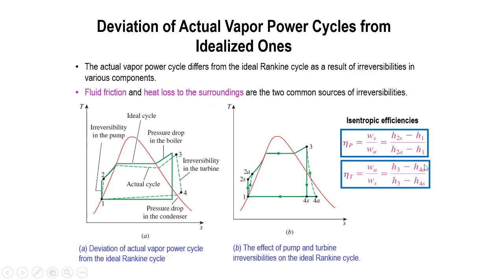The deviation of the actual vapor power cycle from the idealized one involves isentropic efficiency. The actual vapor power cycle differs from the ideal Rankine Cycle as a result of irreversibilities in various components. Friction and heat loss to the surroundings are the two common sources of irreversibility. We denote 'A' for actual and 'S' for isentropic. The isentropic efficiency applies to both the turbine and the pump.